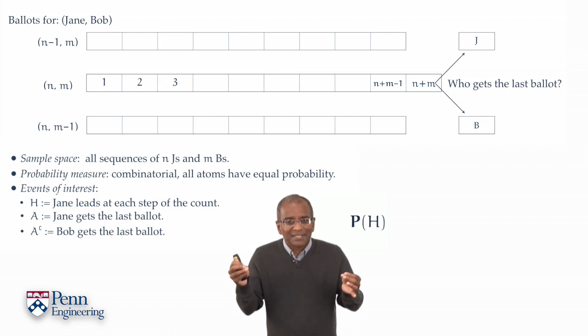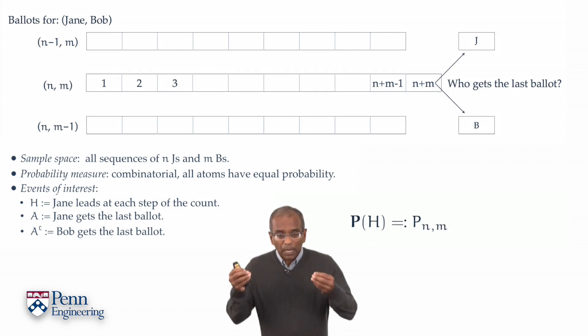But whatever it is, it is going to depend on only two parameters: the number of ballots Jane gets, n, and the number of ballots Bob gets, m. In other words, the probability of H is a function of n and m. Let's introduce a little notation here. Let's call this p with subscripts nm. So we'll call this p of n and m. Keep in mind that p sub n m represents the probability that Jane leads Bob at every step of the count when she gets n votes, Bob gets m votes. And the notation is valid for any choices of n and m.